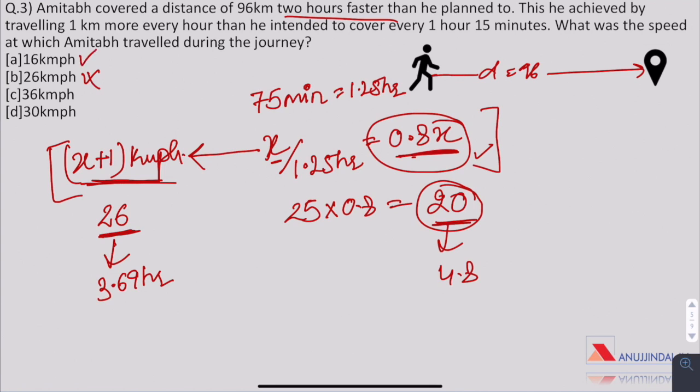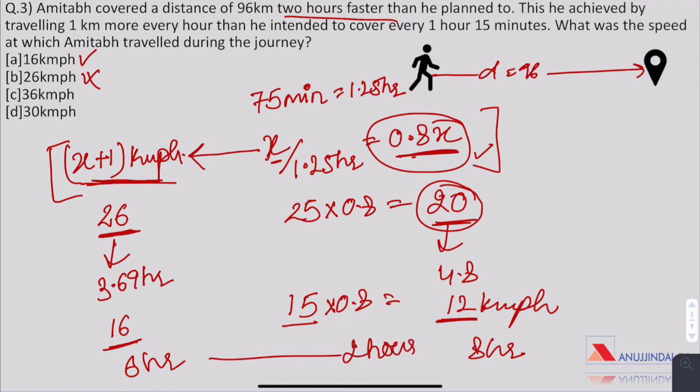Let us check for option A. If it is 16, then this value would have been 15 and 15 into 0.8 gives us 12 kilometer per hour. With 12 kilometer per hour, it would take 8 hours and with 16, it will be 6 hours. The difference is 2 hours. Hence option A is the right answer.